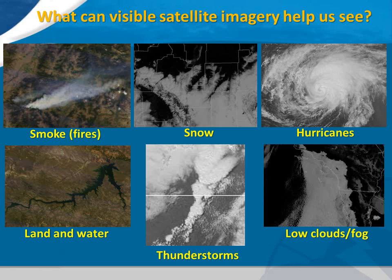Visible satellite imagery can help meteorologists see many different types of weather-related and non-weather-related phenomena. The top row of images shows, from left to right, examples of smoke from area fires, snow cover, which appears as an area of bright white on the ground, and a hurricane, which appears as a large mass of swirling clouds over the ocean.